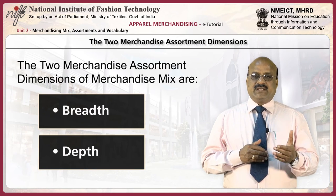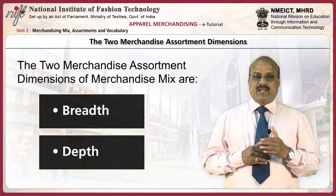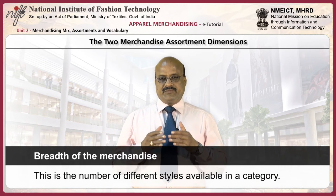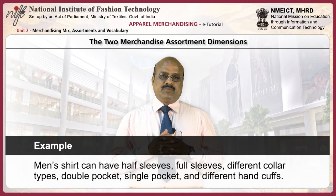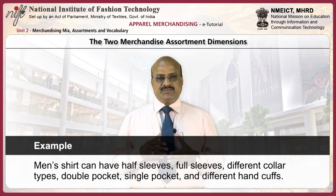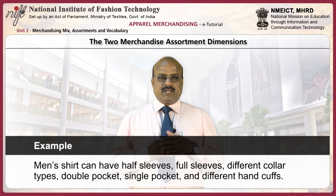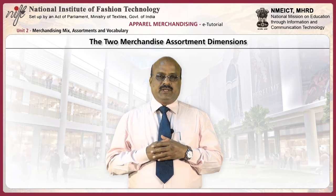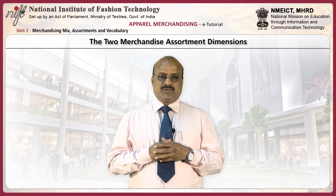To run a successful retail outlet, the retailer must find an optimum balance between the two dimensions of merchandise assortment: breadth and depth. Breadth of merchandise is the number of different styles available in a category. For example, in men's shirts, we can have half sleeves, full sleeves, different collar types, double pocket, single pocket and different cuffs in full-sleeve type — these are the different types possible in a men's shirt.